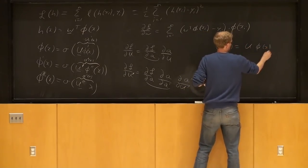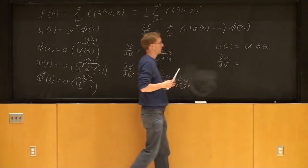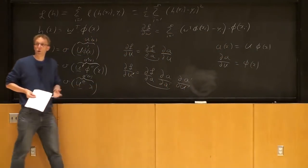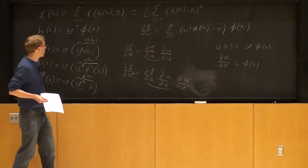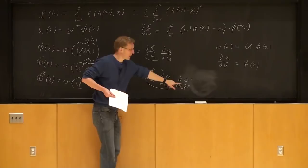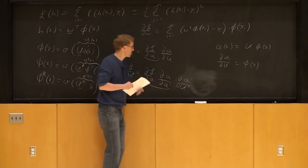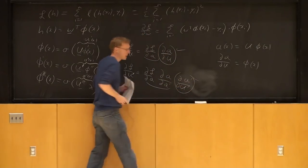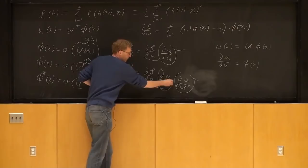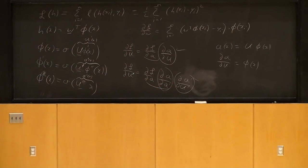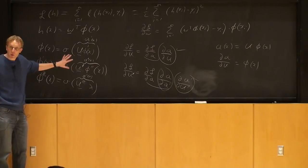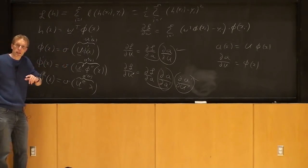Since a(x) = U·Φ(x), da/dU is just Φ(x), which you already computed when you pushed the input through the network — so you just save all those Φ(x) values. The other term, da/da', is just the derivative of the transition function. All of this is on the homework assignment, and it's best if you work through it yourself rather than watching me do it.